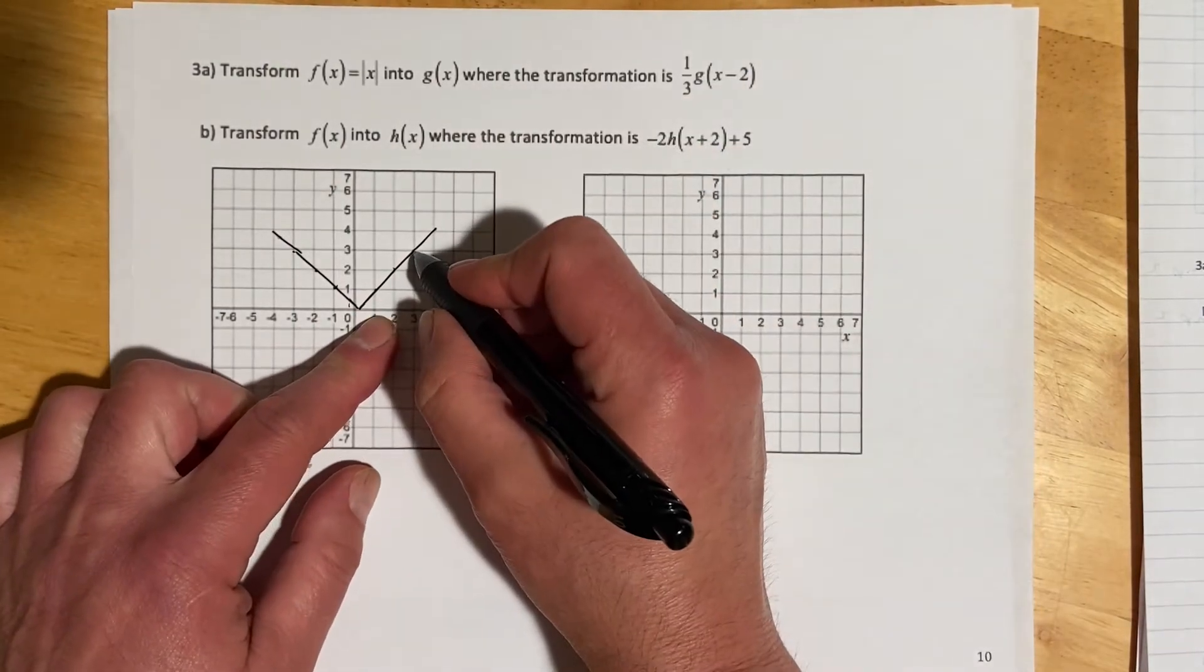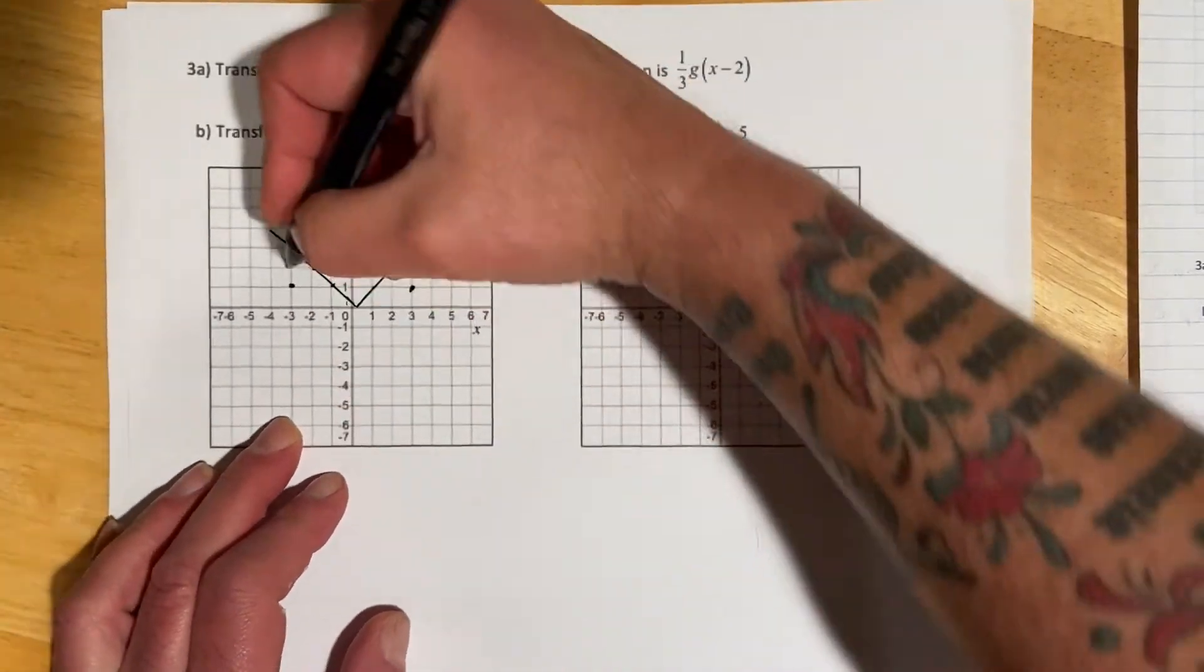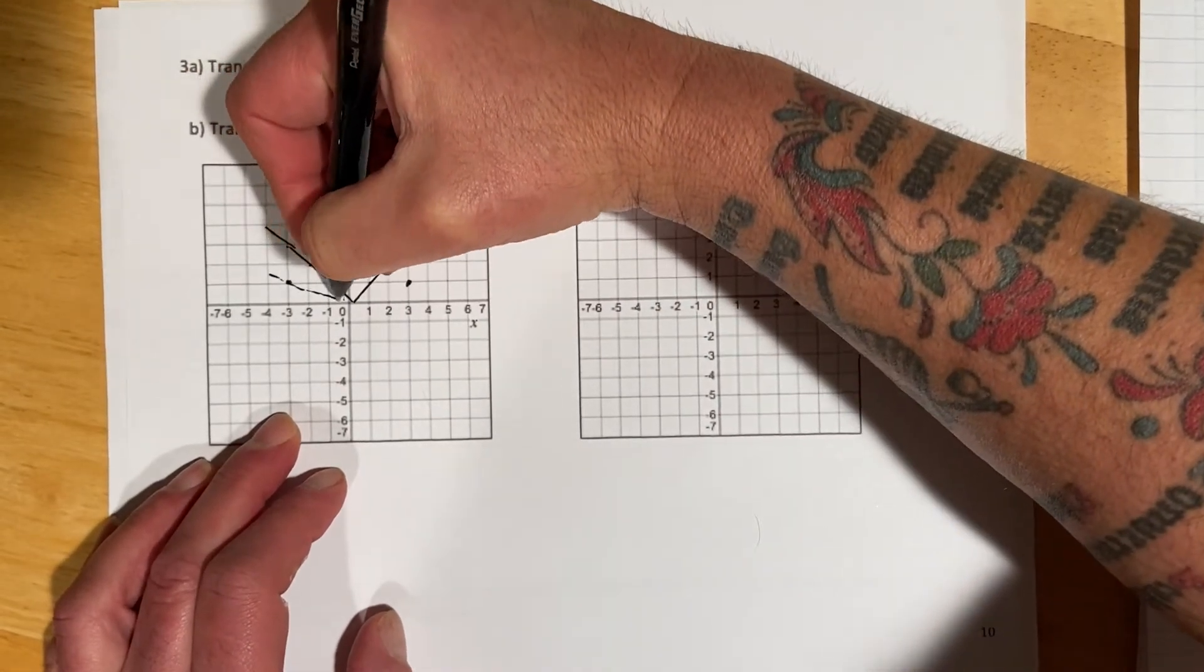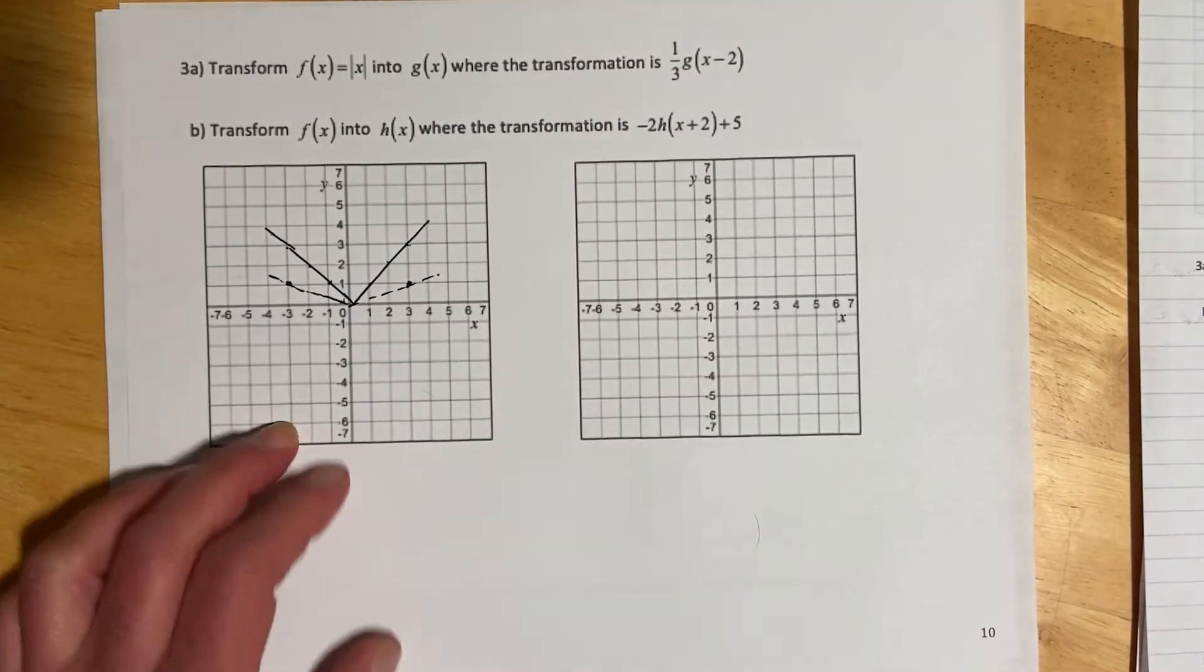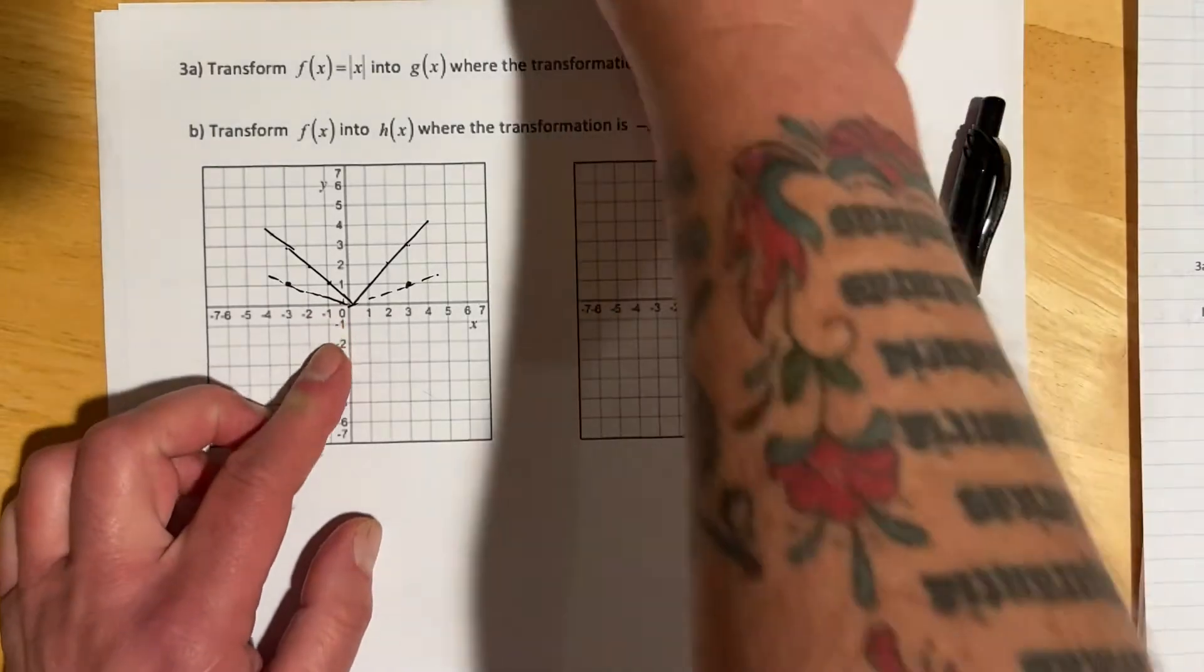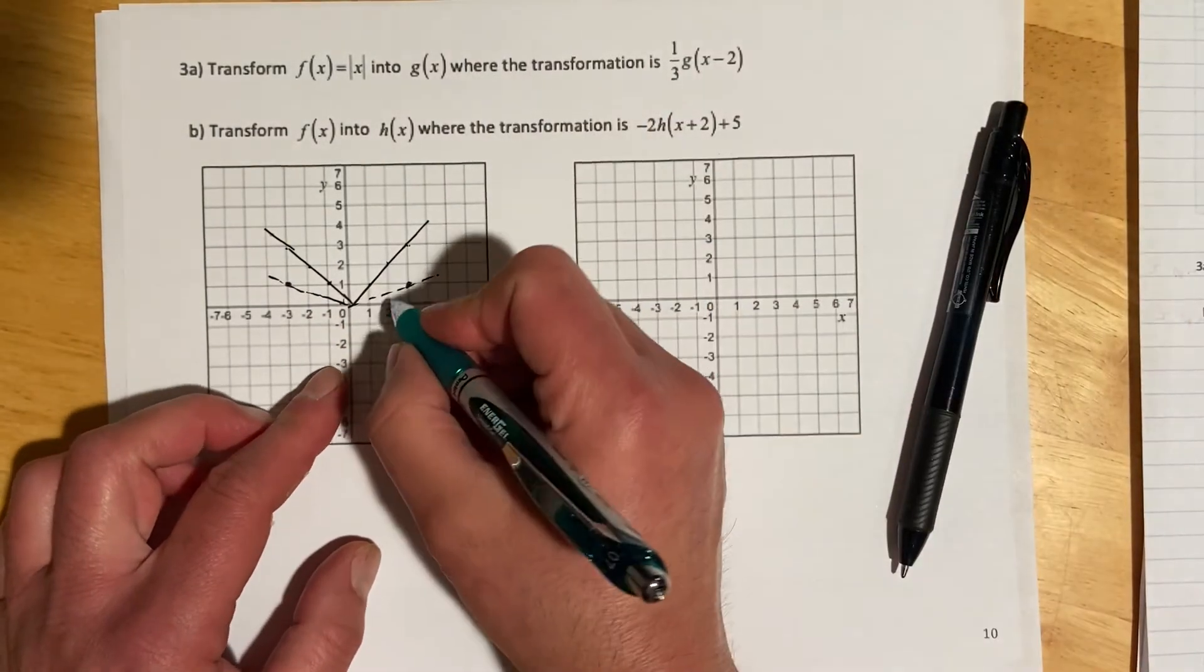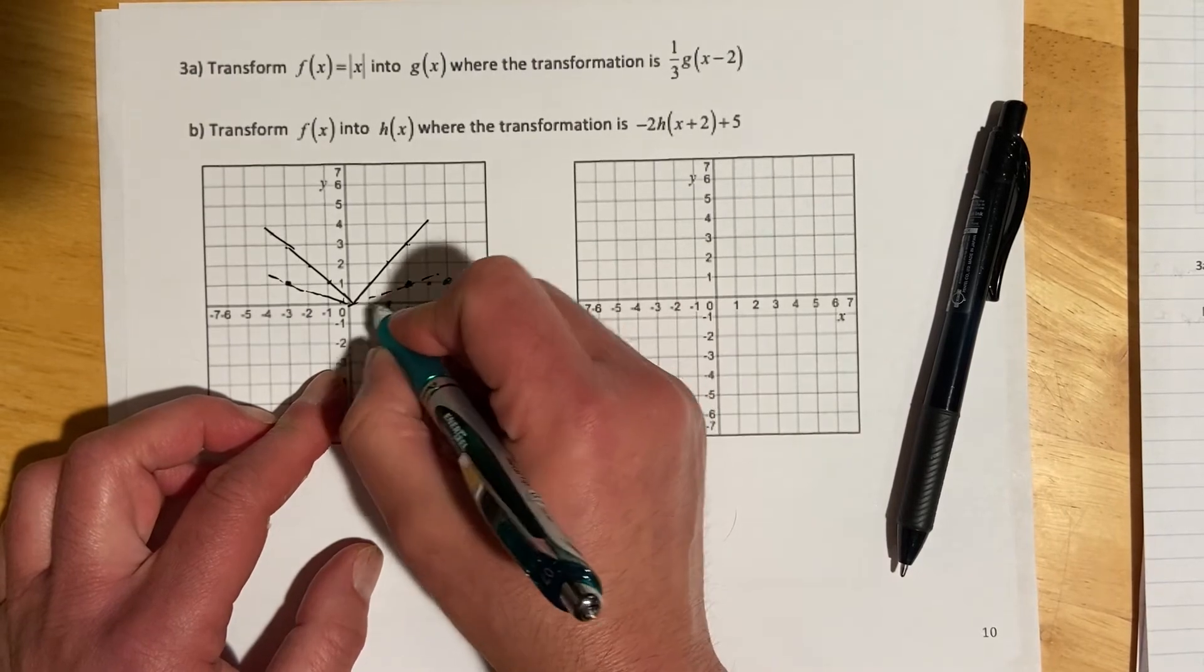I would go out to 3, and then 1/3 of 3 would just be 1. That seems like an easy spot to graph rather than trying to graph a third over here. Once we had that, we're going to put a right 2, so then we're here, and this should be over 3.